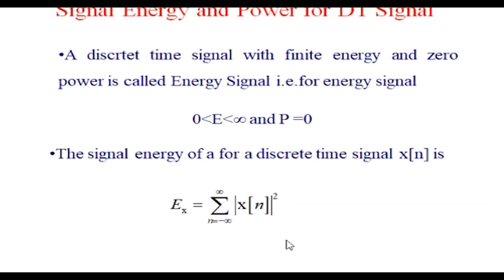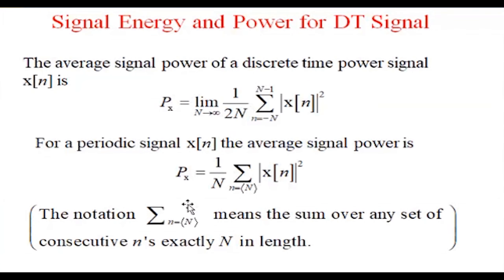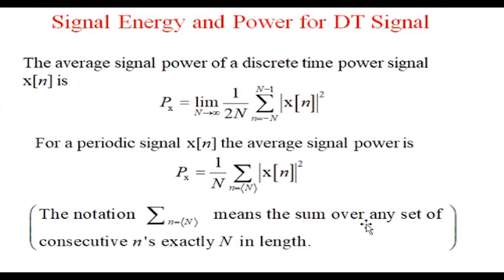If delta-t is very small, then my continuous signal and the discrete signal will look the same. Similarly, the formula for the average power in discrete form uses 1/(2N) with the sum from minus N to N minus one. When calculating average power, it becomes 1/N times the sum, where N is the length of the sequence.